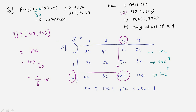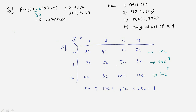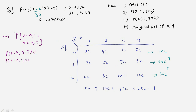For the third part, we need P(X < 1, Y > 2). X < 1 means x can be 0 or 1, and Y > 2 means y can be 3 or 4. The combinations are: (x=0, y=3), (x=0, y=4), (x=1, y=3), and (x=1, y=4).